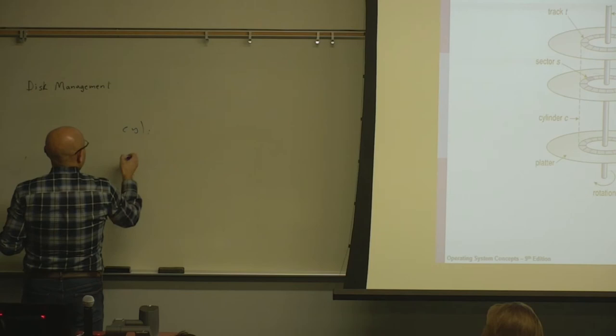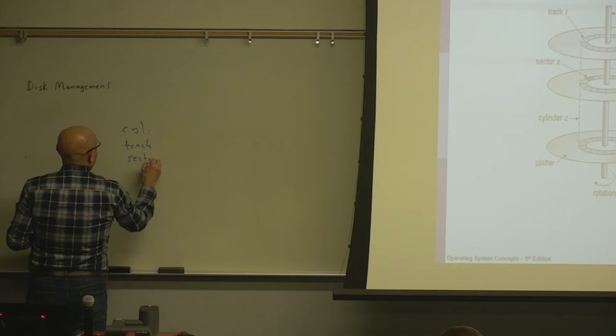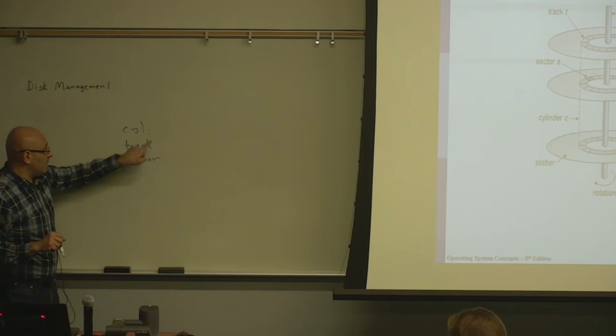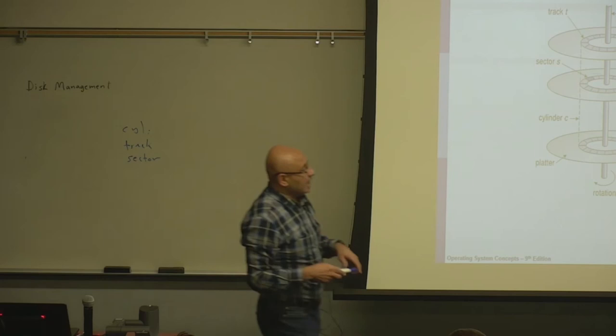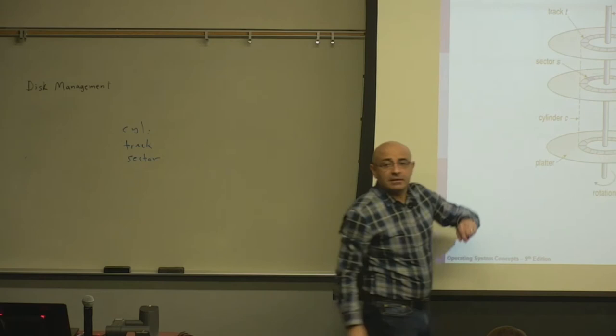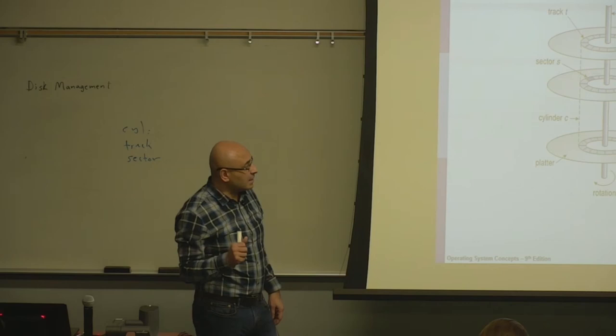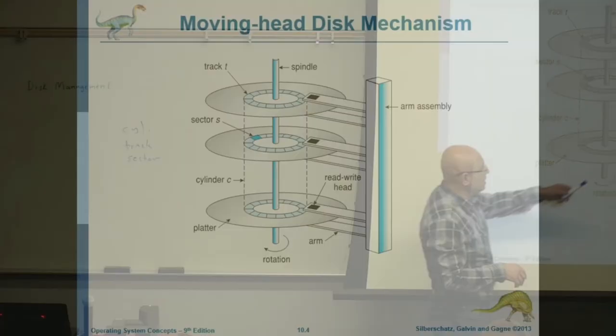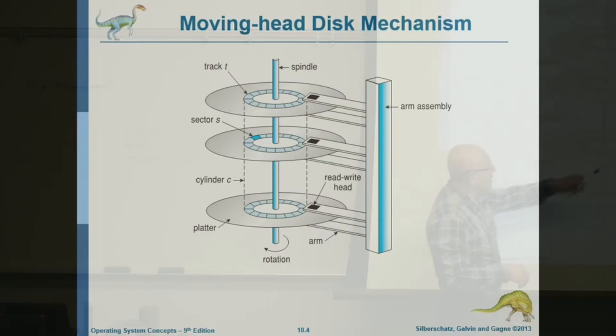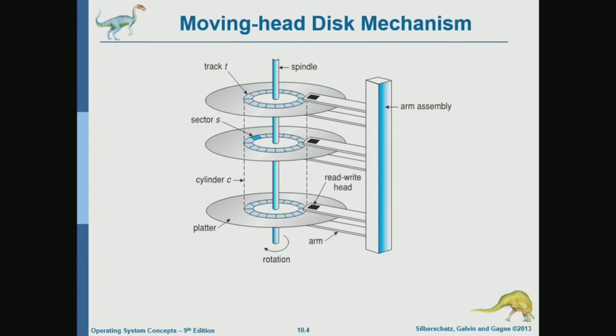A disk address consists of a cylinder number, a track number within that cylinder, and a sector number within that track. Cylinder zero is the closest to the head — the read-write head. In order to read a certain sector, the head must meet that sector. So in order to do a read or a write, the head and the target sector must meet.